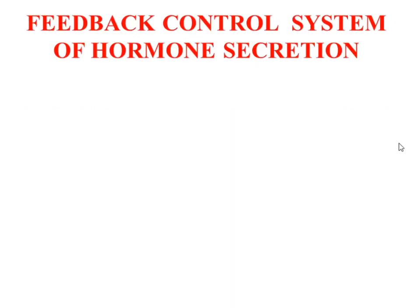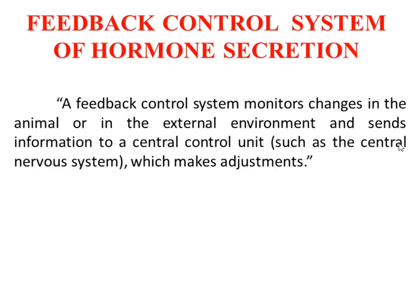Now we discuss the feedback control system of hormone secretion. A feedback control system monitors and controls changes in the animal or the external environment and sends information to a central control unit, such as the central nervous system, which makes an adjustment. It sends information to the brain, which then makes the necessary adjustments.